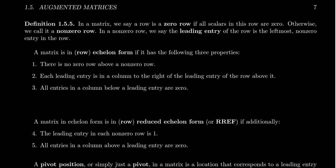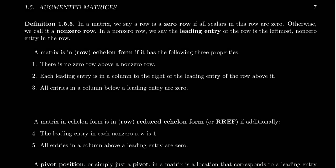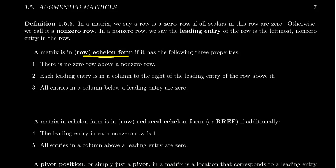With that terminology in mind, we're now ready to talk about the echelon form of a matrix. This is specifically what we call the row echelon form of a matrix. You could talk about column echelon forms, but we won't in this series. So when I say echelon form, that'll be meaning row echelon form.